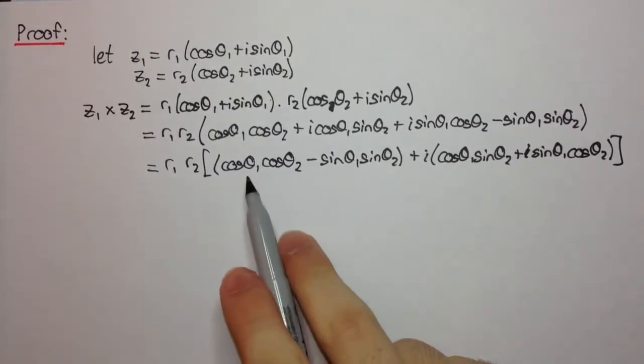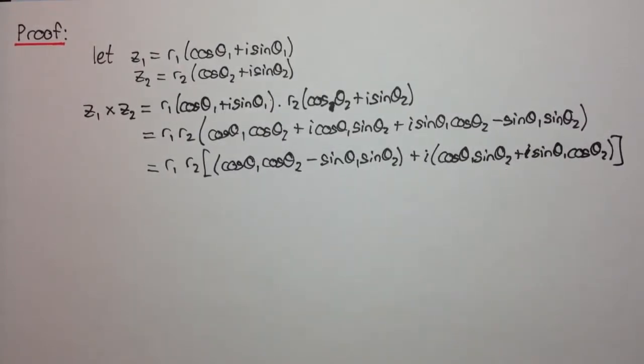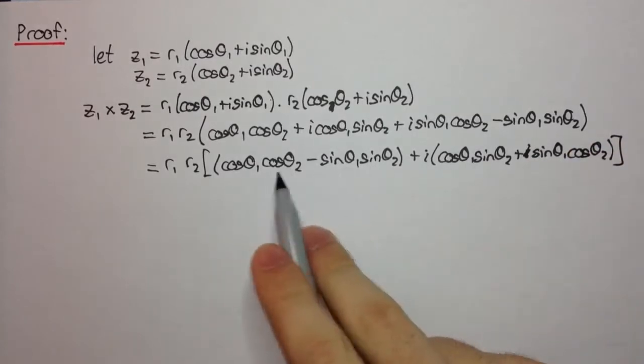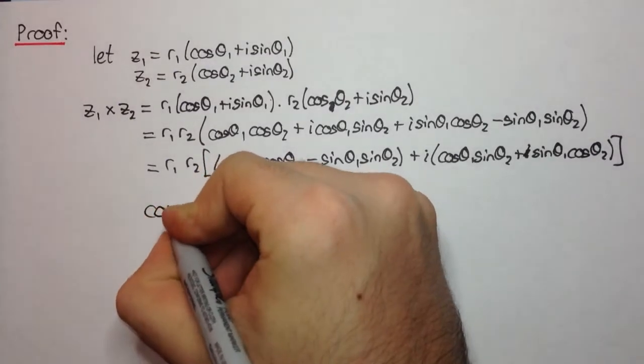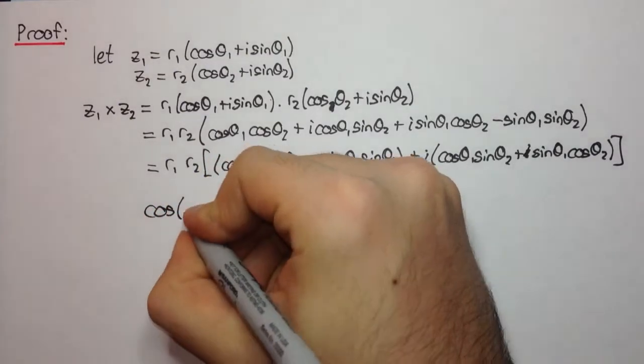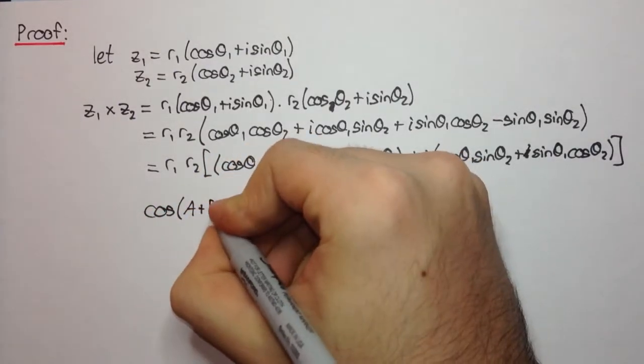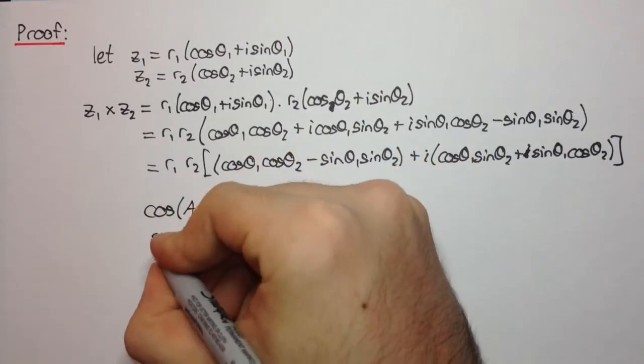Alright, now we need to try and find a way to simplify these two parts here, the real part and the imaginary part. So you should remember back to your three unit trigonometry where we looked at the expansions of cos and sin of compound angles.